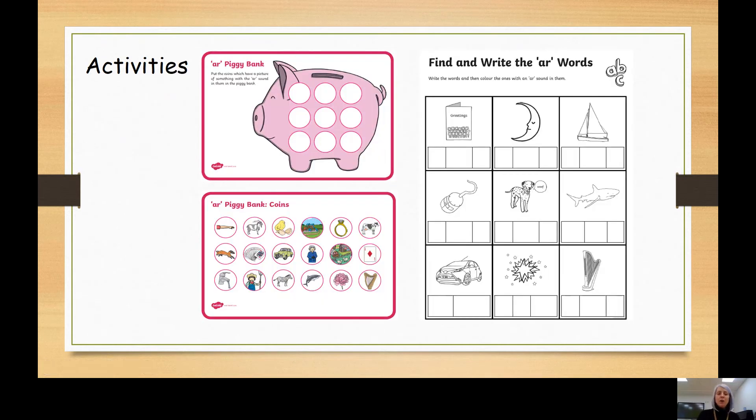For our final activity, there's a choice of two. If you want to do both of them, that's fine. If you want to choose one of them, then that's fine too. So you have an AR piggy bank.